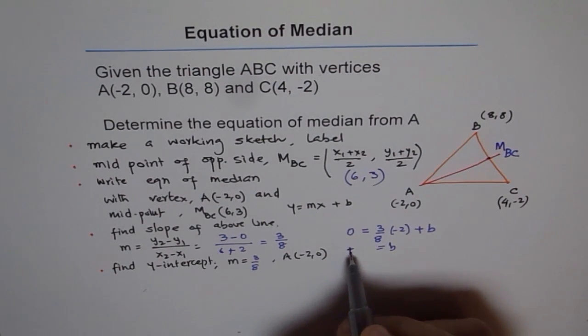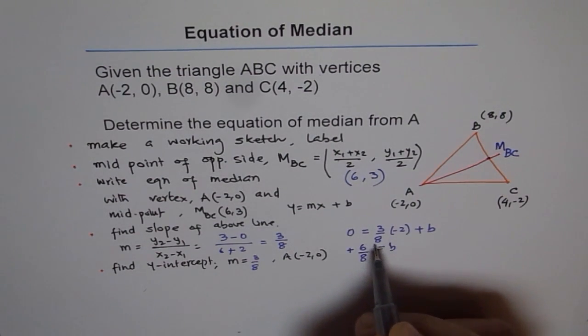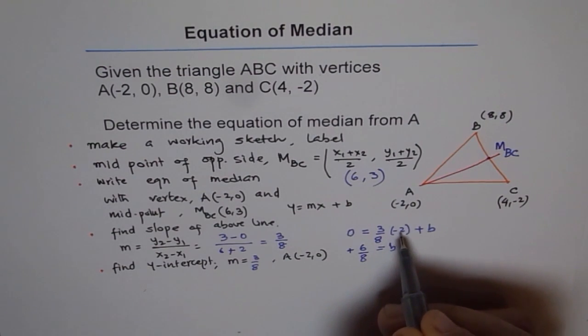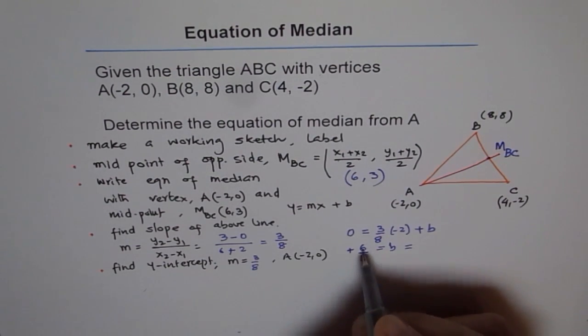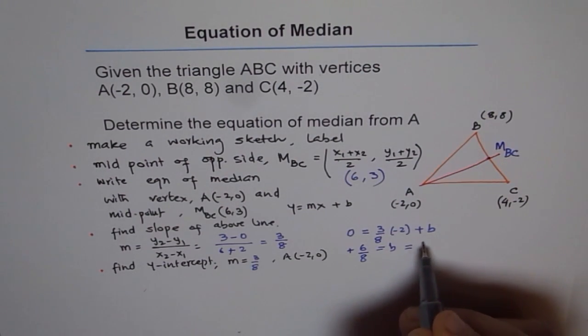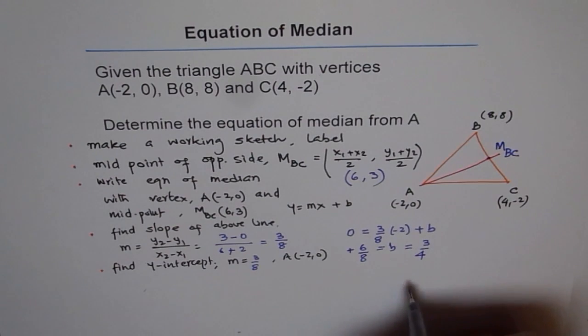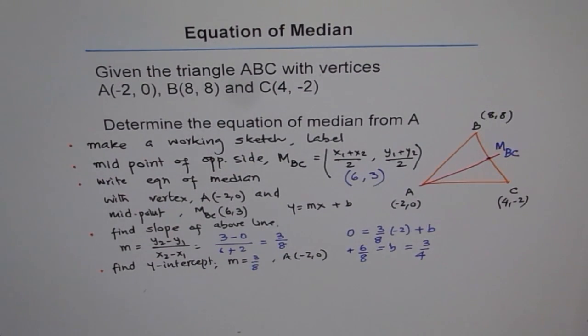So B is equal to, so -2. When it comes from this side, it becomes plus 6 over 8. I could write 6 over 8 and then simplify. Or I could even do here, divide 2 and 8 and get 4. So I get B equals to, just simplify this now, 3 over 4. So B is 3 over 4 for us. So now we know B, we know M, and therefore we know the equation.